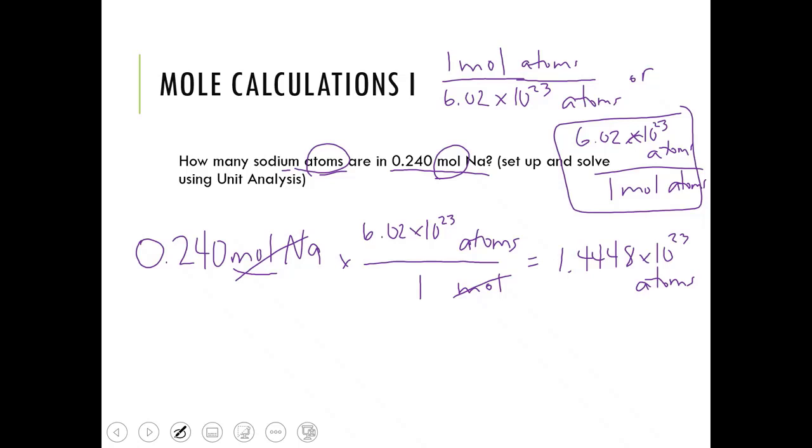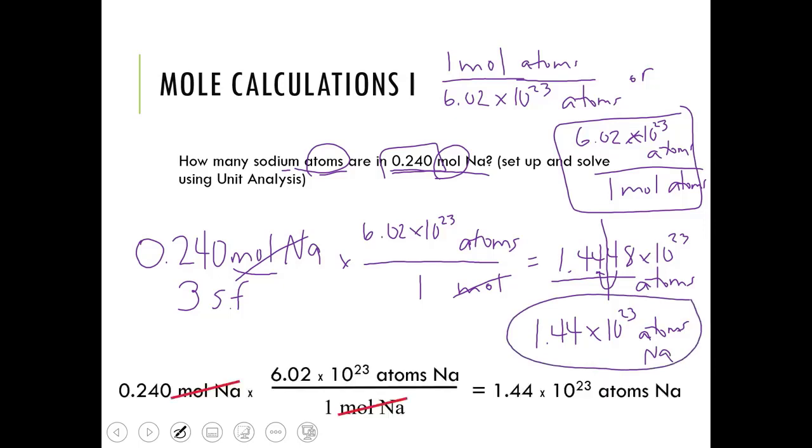Now the last thing we need to do is go back and say, how many significant figures did I start with? And I started with 3 sigs. So I need to have 3 in my final answer. And that 4 is not going to do anything to that 4. So 1.44 times 10 to the 23rd atoms of sodium, Na. And circle your final answer. And this is a nice, neat way.